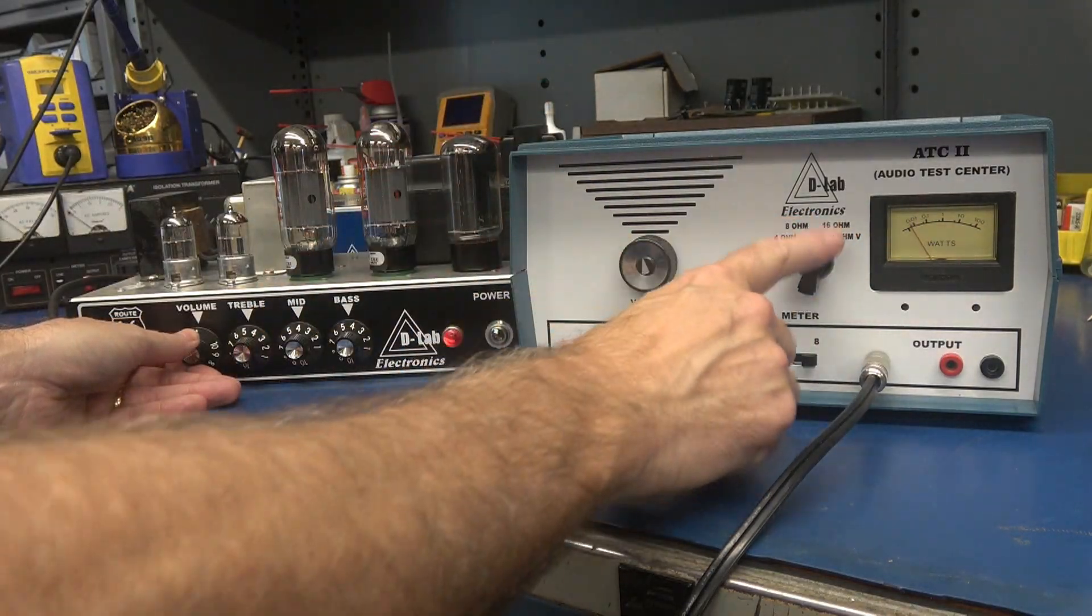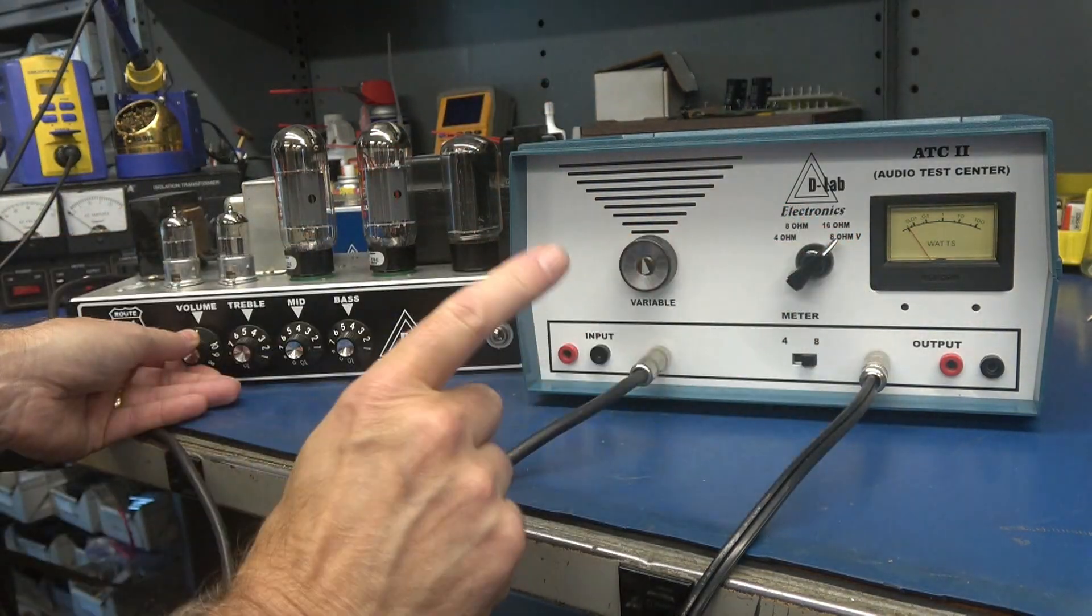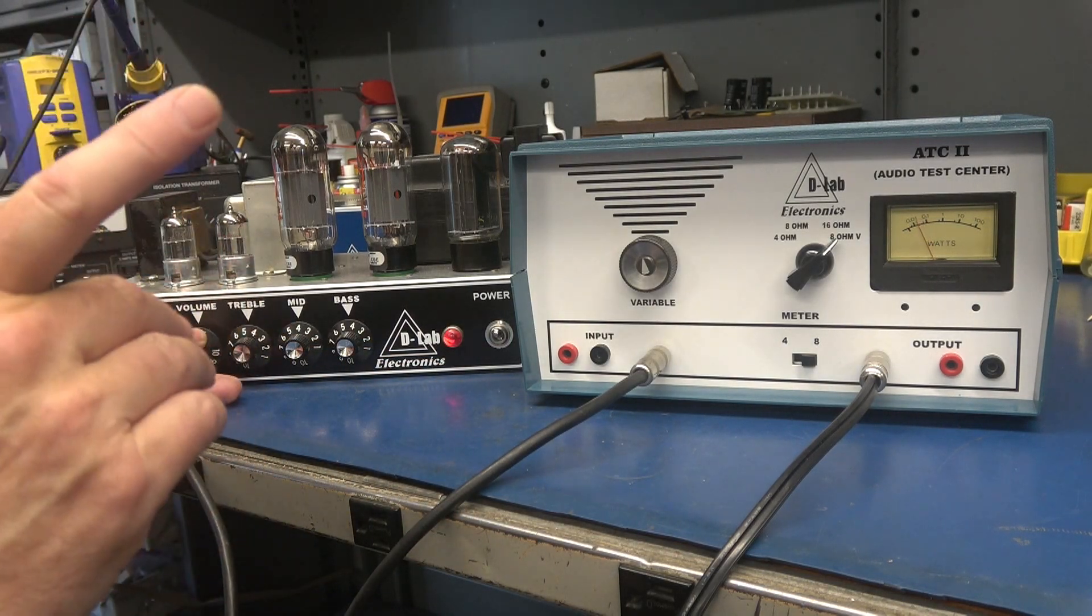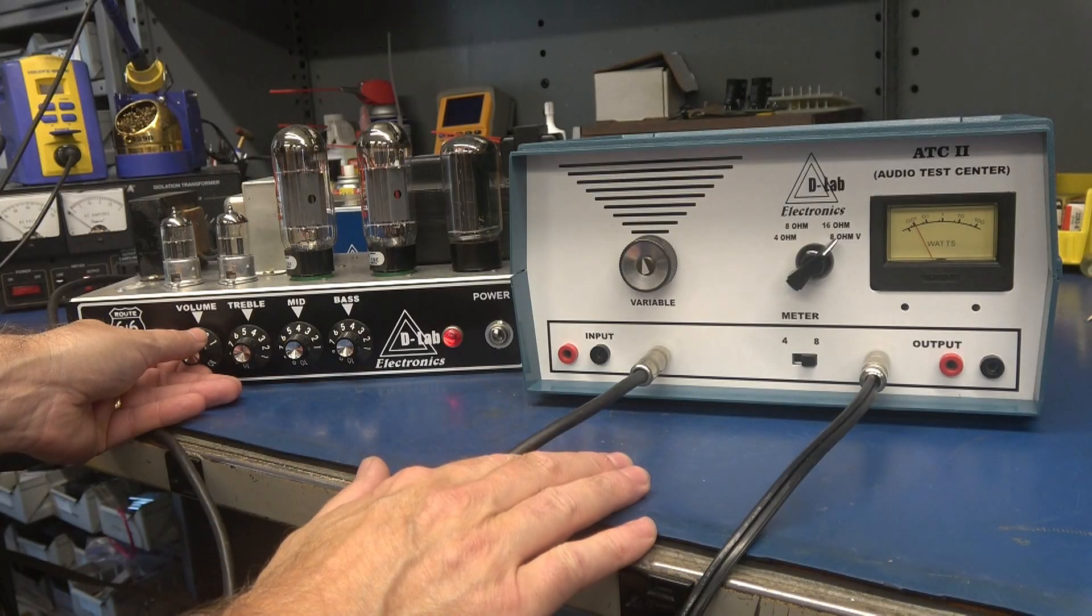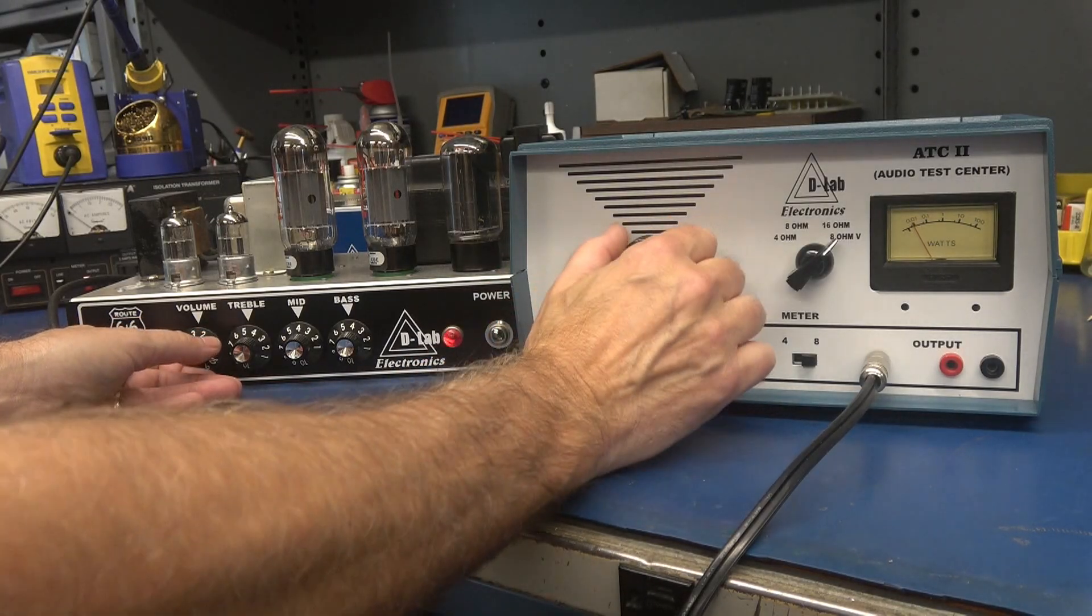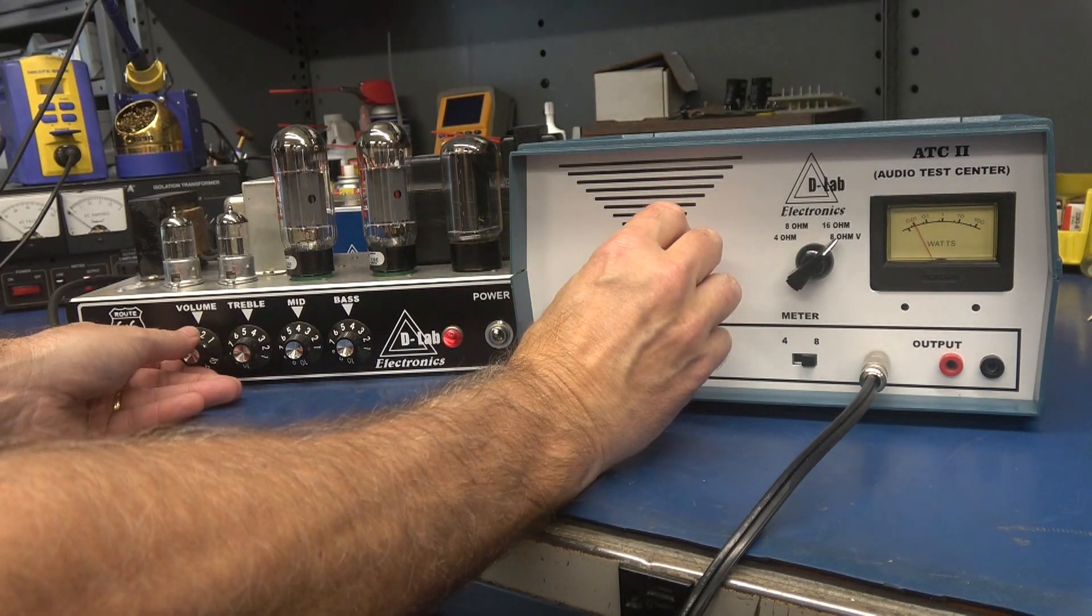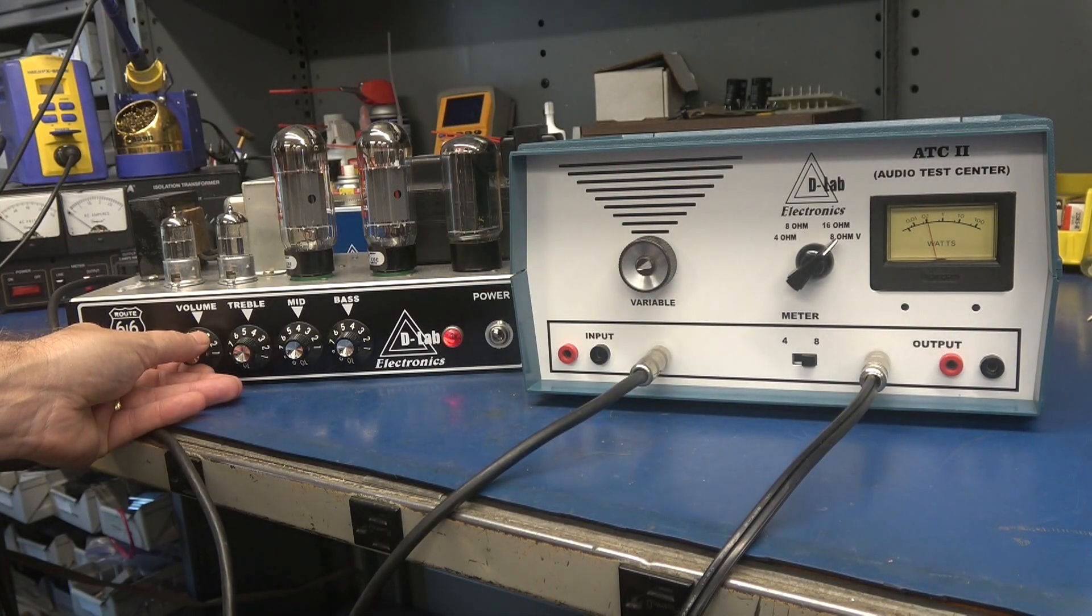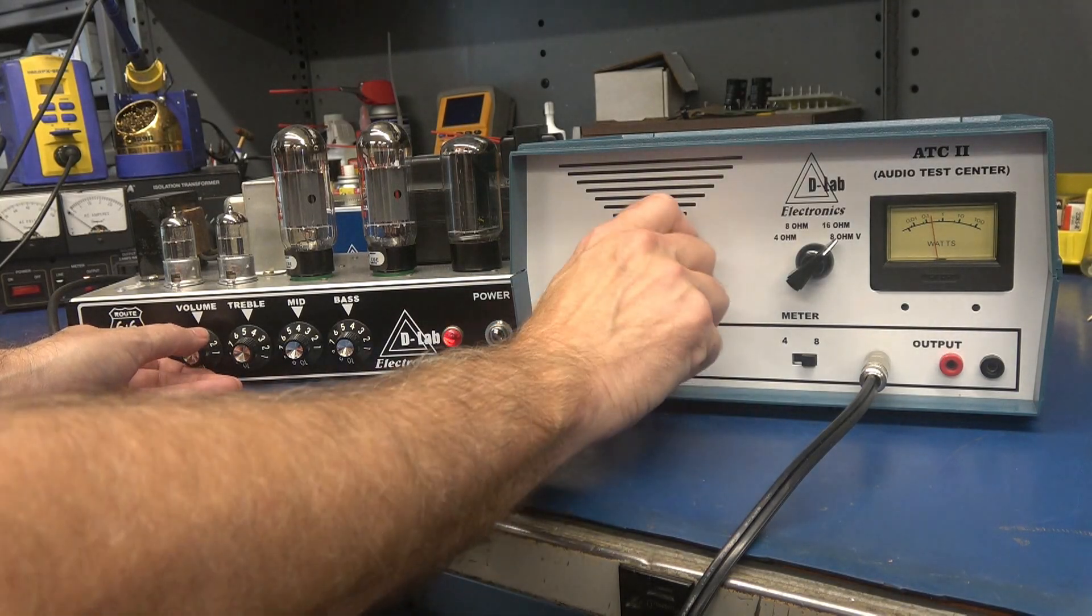But when you go to the eight ohm variable, you're going to hear this amp playing. But it's still acting as a dummy load. Now your monitor speaker can run at a much lower volume while you're testing that amp. Bring her up.